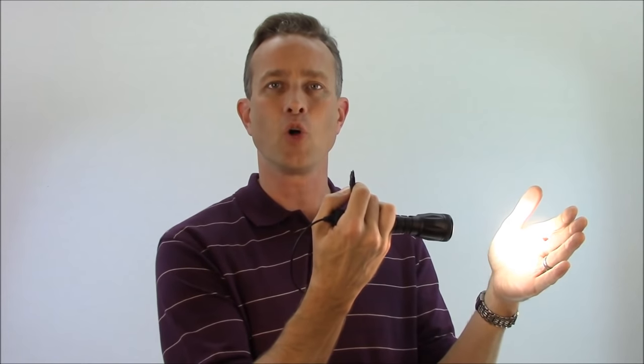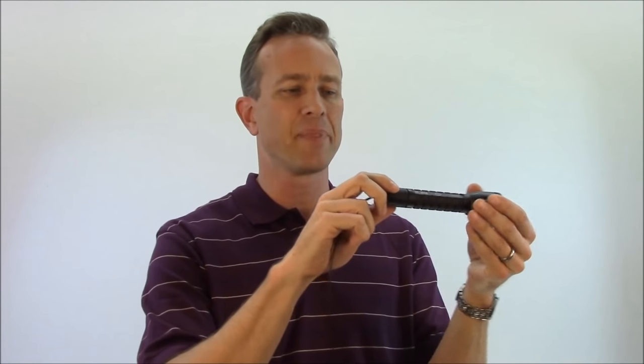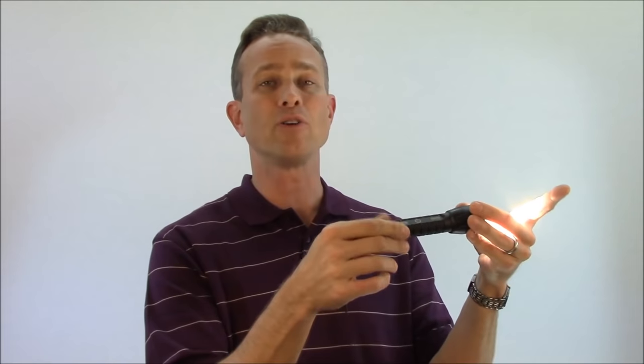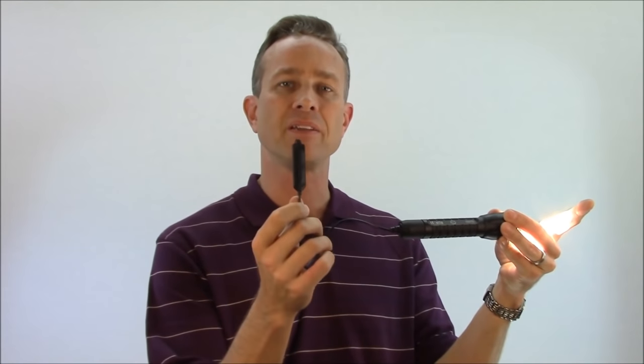When I need this constant on, if my thumb gets tired from holding this pressure pad, again simply take the tail cap, rotate it fully clockwise or screw it all the way on, and now it's on hands-free, independent of the pressure pad.